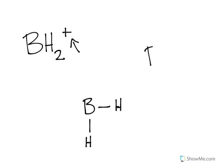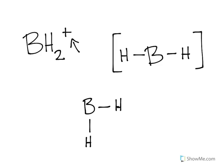In molecular geometry, you'll understand that these bonding areas will maximize the distances between them, so they're going to try to be 180 degrees away from each other. So I'll redraw this: BH2 with a plus charge.